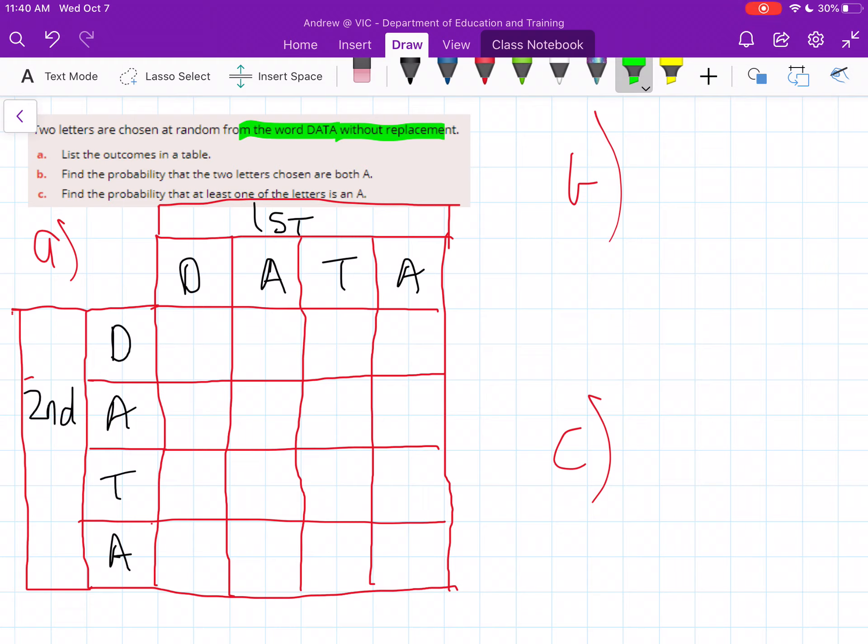But just remember you can't use something that has been selected first already. So I'll go down the D column of the first selection. We can't choose D again once D is chosen. So you'll notice we can't actually have this option of two D's. Then here we can have D, A.